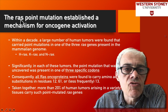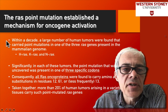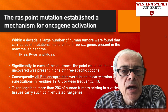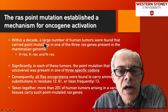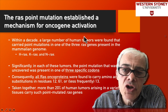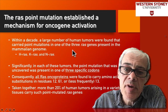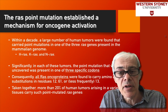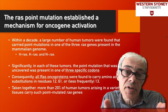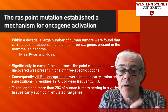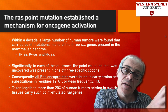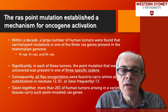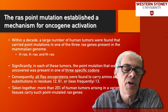Understanding this RAS point mutation established a mechanism for how oncogenes become activated. Within a decade of discovering the RAS mutation, a large number of other human tumours were found to carry the same mutation. You take a tumour sample from a patient, sequence the RAS gene, and you see that mutation at the 12th codon. All the cells around the tumour have the normal sequence, but the tumour sample carries the mutation — so it's a normal somatic mutation driving the process of cancer formation.